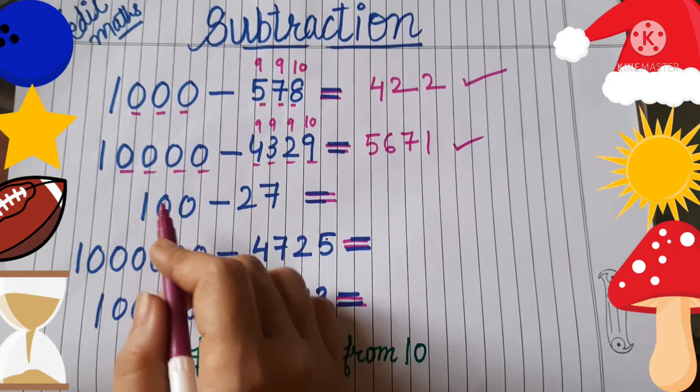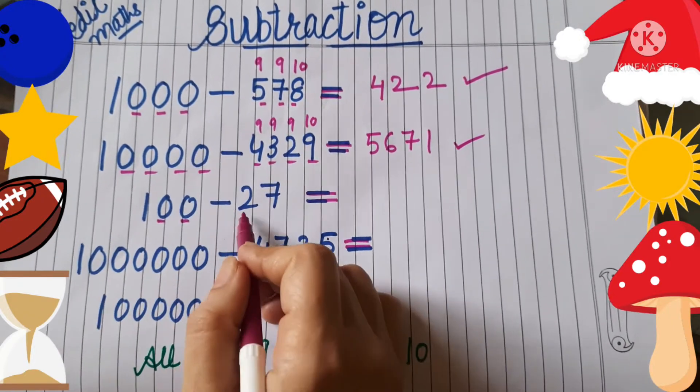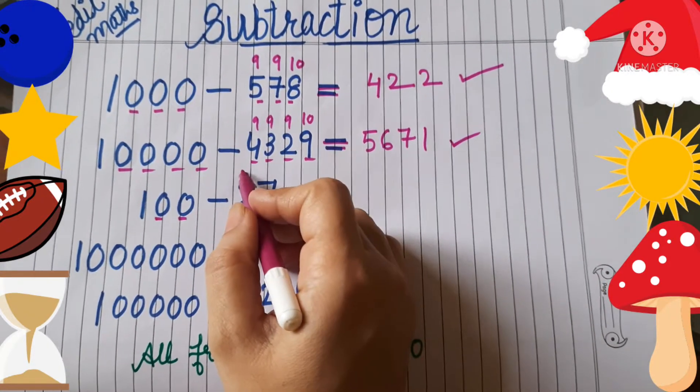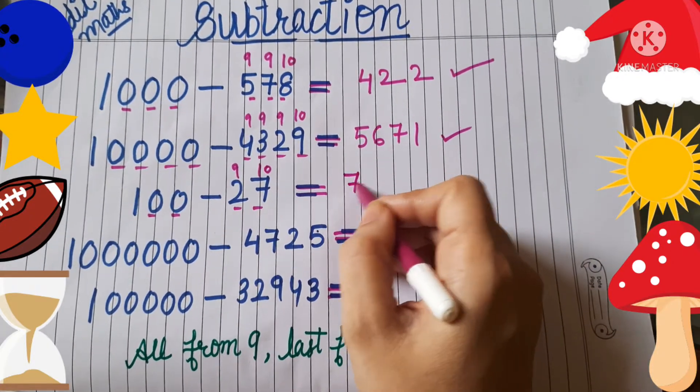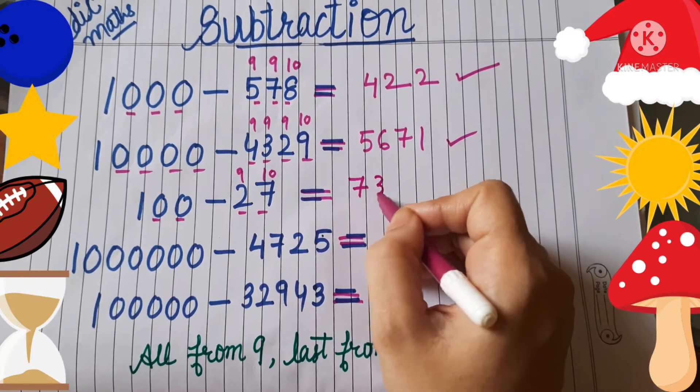Next is 100. There are 2 zeros and 2 digits we have. Write down 9 and the last digit we write 10. 9 minus 2 is 7, 10 minus 7 is 3. That's done.